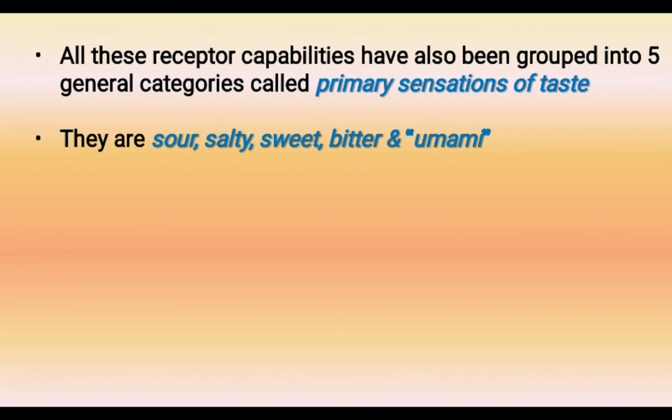The 5 categories of primary sensations of taste are: sour, salty, sweet, bitter, and umami.